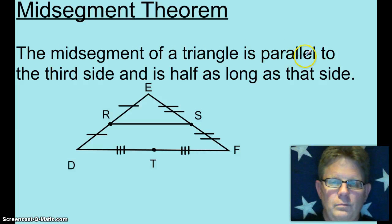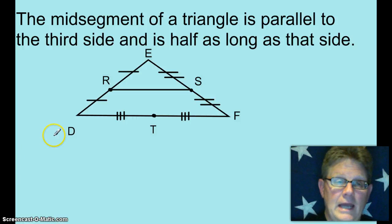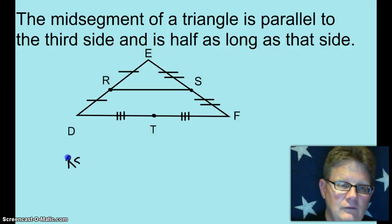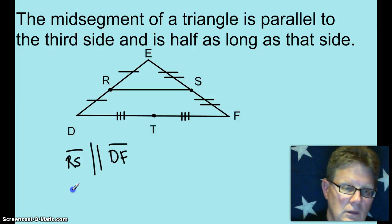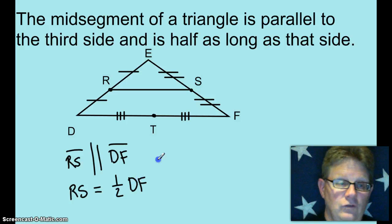The mid-segment of a triangle is parallel to the third side and half as long as that side. So, in the diagram here — you might want to pause to write it down — I have ER congruent to RD, and ES congruent to SF. So R and S are midpoints, which makes RS a mid-segment. That mid-segment RS is parallel to the third side it does not intersect, DF. And the mid-segment theorem also says that RS is half the length of DF.